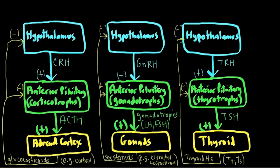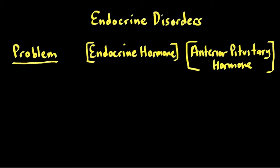That negative feedback stabilizes the levels of these hormones so they don't go out of control. We want to think about what happens to hormone levels when there's a disturbance in these systems — specifically deficiency or excess states. Note that hypothalamic hormones aren't listed because they can't be measured easily in the blood due to their very small concentrations. They're released into the portal system and reach high concentrations at the anterior pituitary, but can't be measured in peripheral blood.